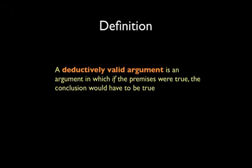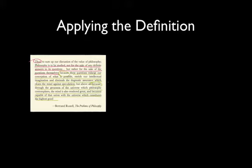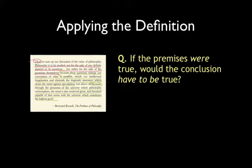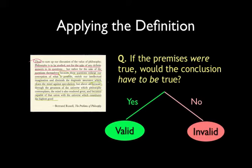By definition, a deductively valid argument is an argument in which if the premises were true, the conclusion would have to be true. Once we have identified an argument in a philosophical text, we can simply ask ourselves: if the premises were true, would the conclusion have to be true? And if the answer is yes, the argument is valid. Otherwise, we say the argument is invalid.